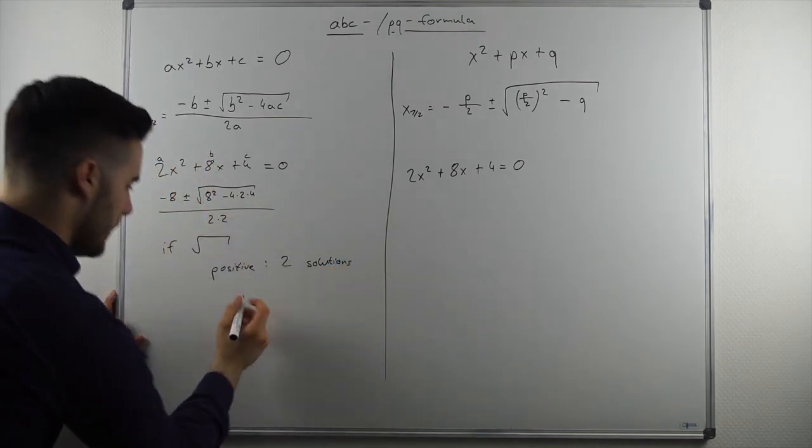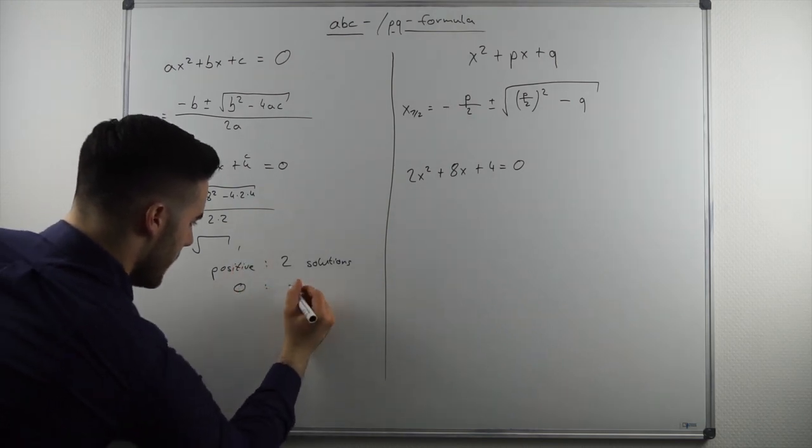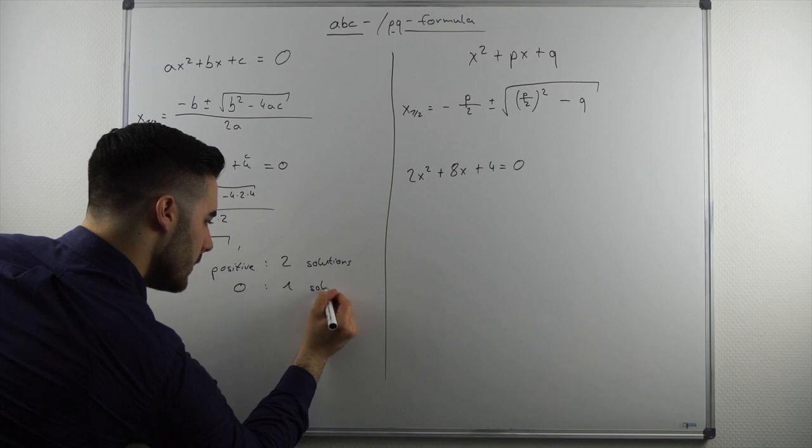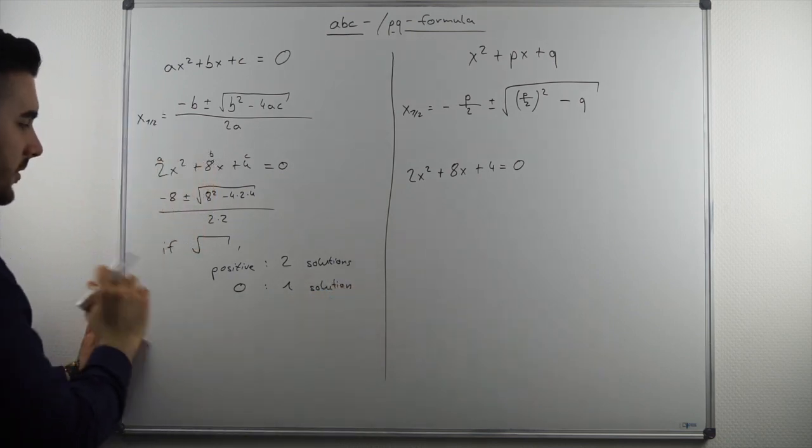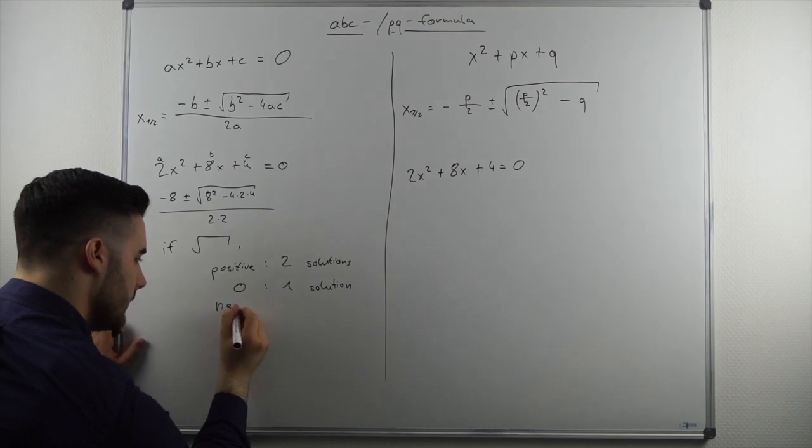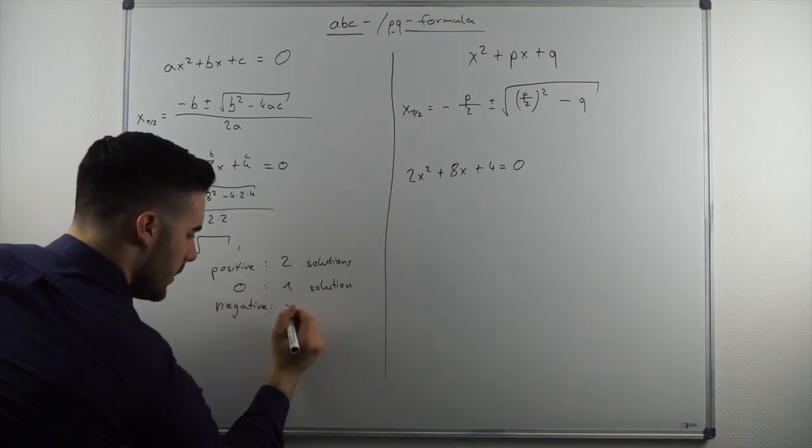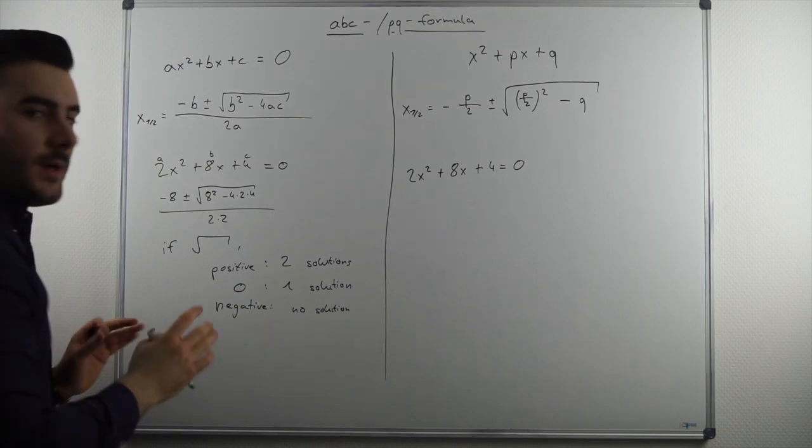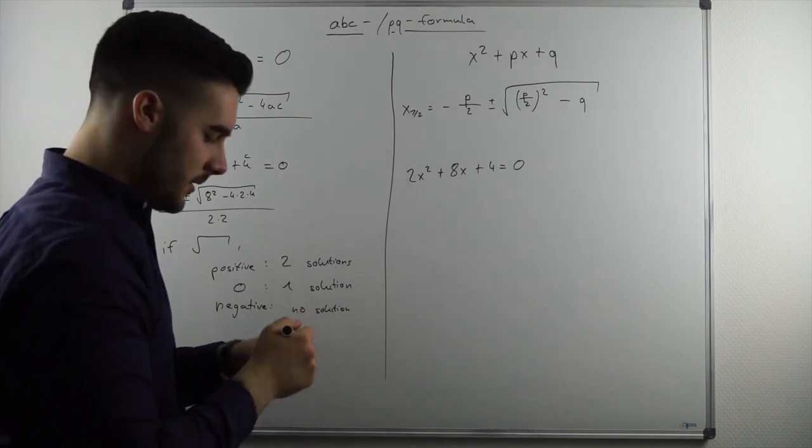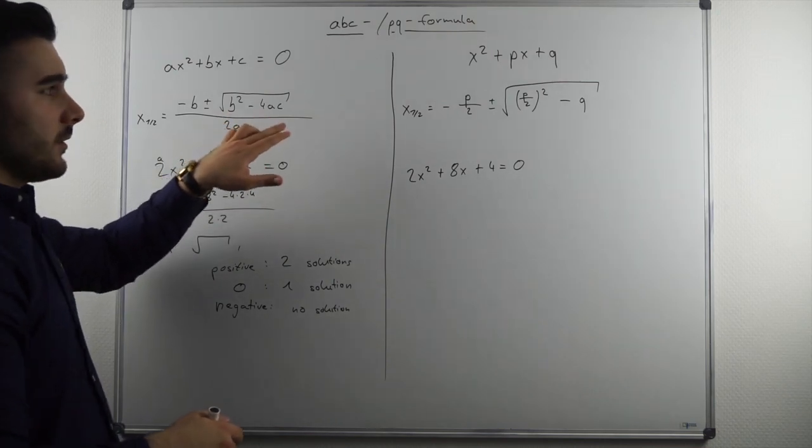If the square root is zero, then we will have one solution. And if the square root is negative, we won't have any solution. Which makes completely intuitive sense, because as I've already mentioned in the video about square roots.